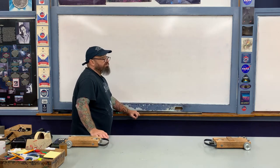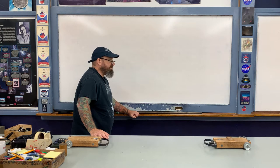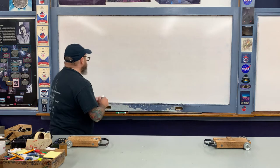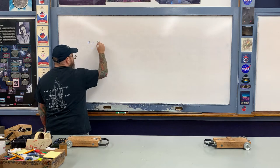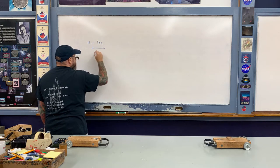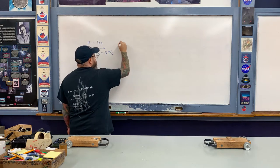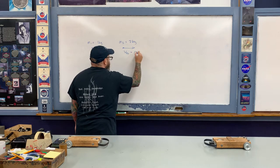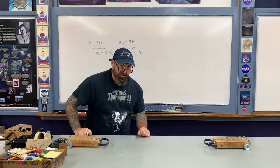The first object has a mass of one kilogram and is initially moving at three meters per second. It then overtakes the second object of mass two kilograms, which is initially moving in the same direction at one meter per second. We need to find the final velocity of each object. Here's m1 at one kilogram moving to the right at three meters per second, overtaking and colliding elastically with m2 at two kilograms moving to the right at v2-naught equals one meter per second.